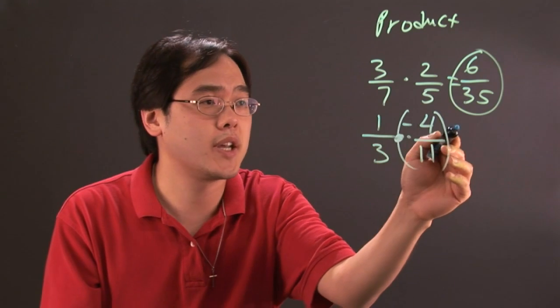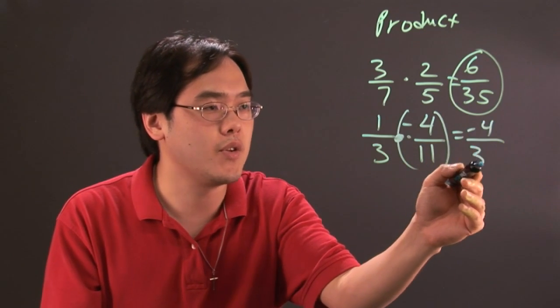Again, you multiply across. 1 times negative 4 is negative 4 and 3 times 11 is going to give you 33.